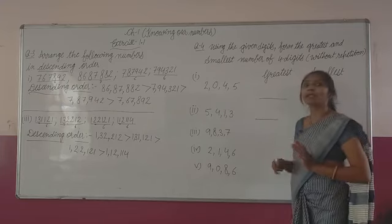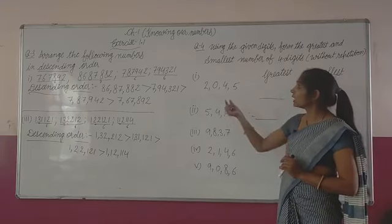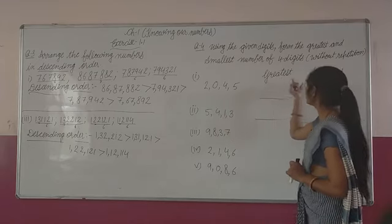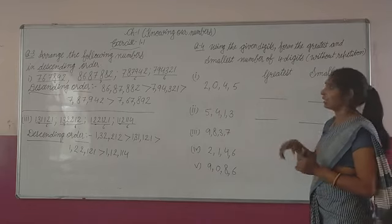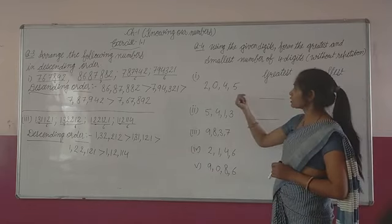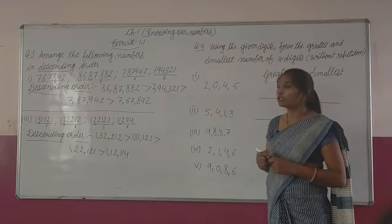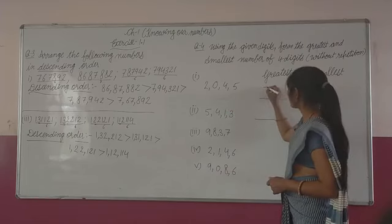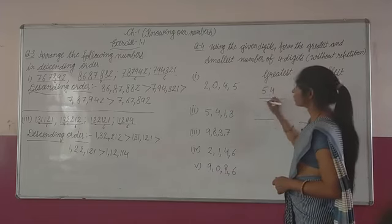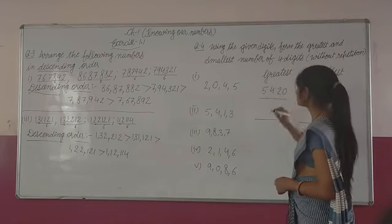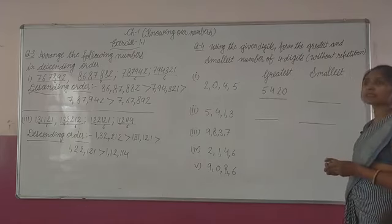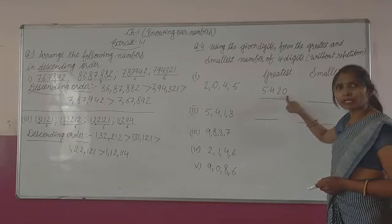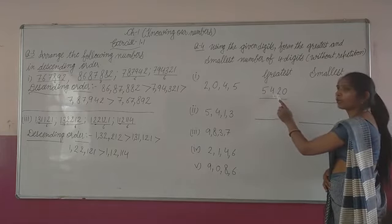We cannot read 2045 directly because a comma is given after each digit — so these are individual digits, not a number. We have to form the number. When forming the greatest number, which digit do we write first? The greater one. The largest digit among them is five, then four, then two, then zero. So the greatest number formed is 5420.